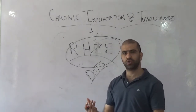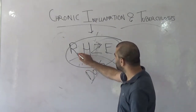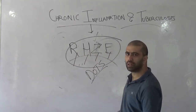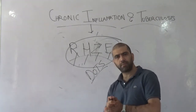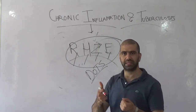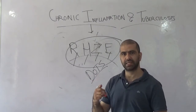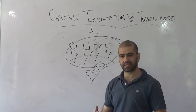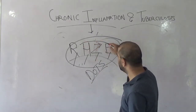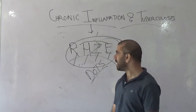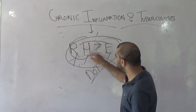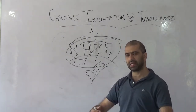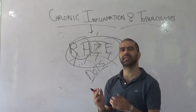The current regimen used in the DOTS strategy uses rifampicin, isoniazid, pyrazinamide, and ethambutol. A person has to take these drugs for six months in two phases: the intensive phase lasts two months with all four drugs, and the continuation phase uses only rifampicin and isoniazid for four more months, totaling six months of treatment.